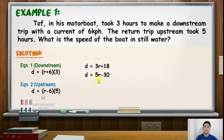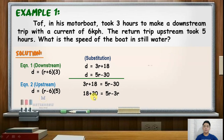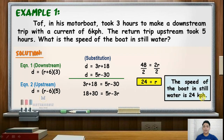Now we can use substitution. The value of D in equation 1 is substituted into equation 2: 3R plus 18 equals 5R minus 30. Combining like terms, 3R moves to the right as negative 3R, and negative 30 moves to the left as positive 30. So 18 plus 30 equals 48, and 5R minus 3R equals 2R. Dividing both sides by 2, R equals 24. Hence, the speed of the boat in still water is 24 kilometers per hour.